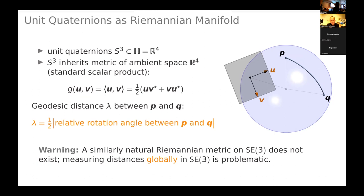A word of warning: what is simple and natural in SO(3) does not work in SE(3). A similarly natural Riemannian metric and distance notion does not exist on SE(3). The reason is that the generic displacement in SE(3) is a helical displacement, which has both a rotation angle and a translation distance. These are physically incompatible: the angle is dimensionless, while the distance has physical units — meters, millimeters, light years. So you cannot combine them in a globally meaningful way without an arbitrary choice of scale.